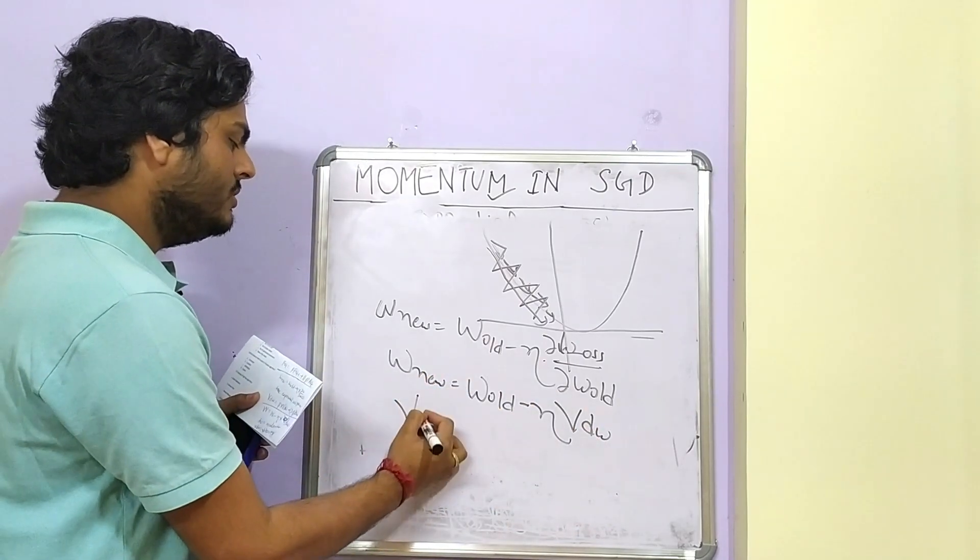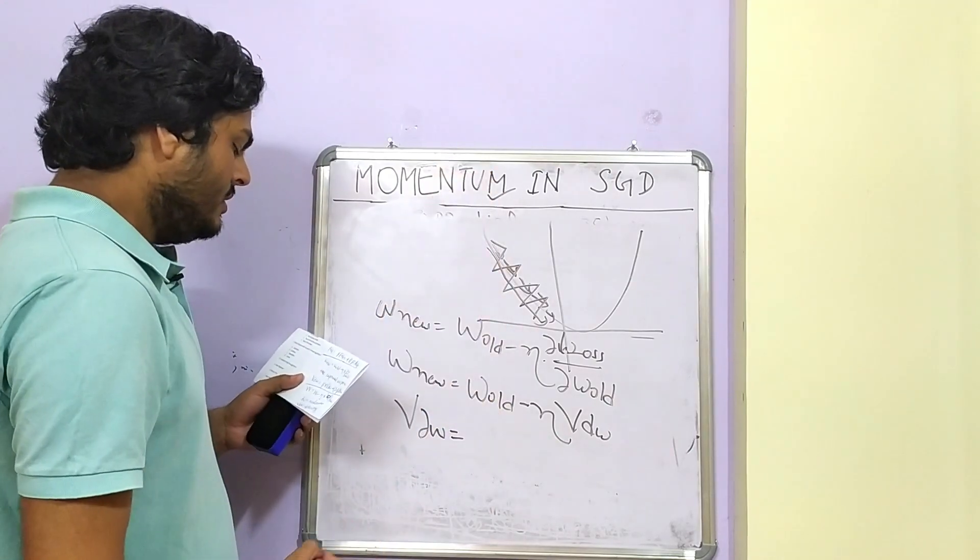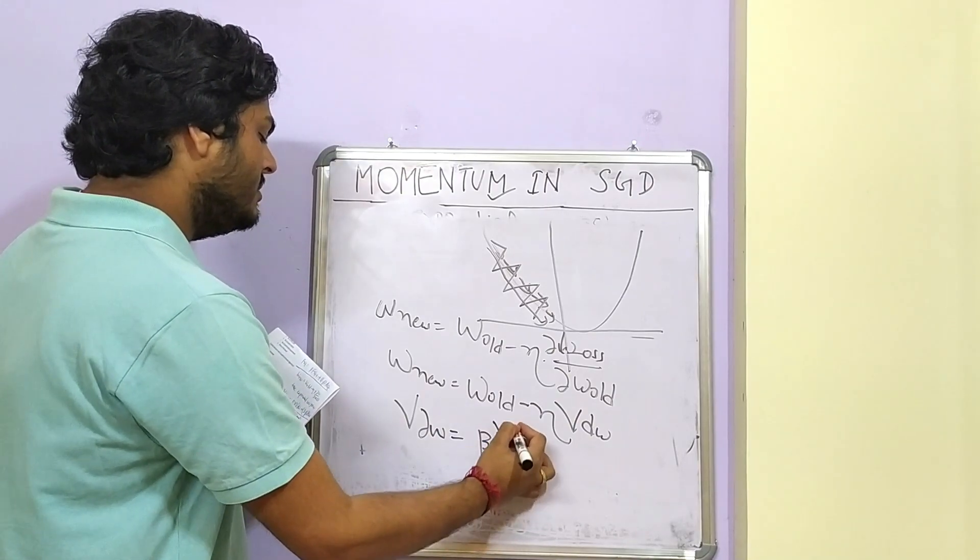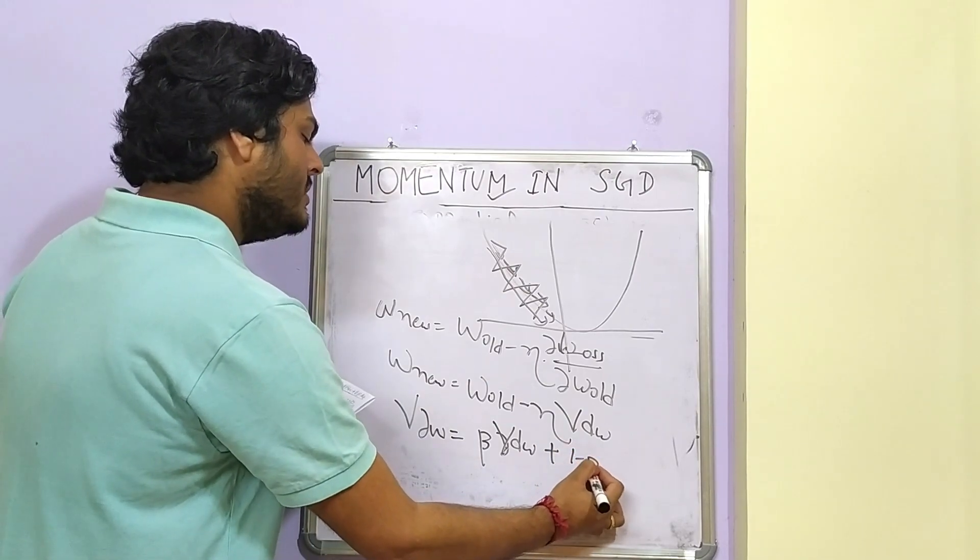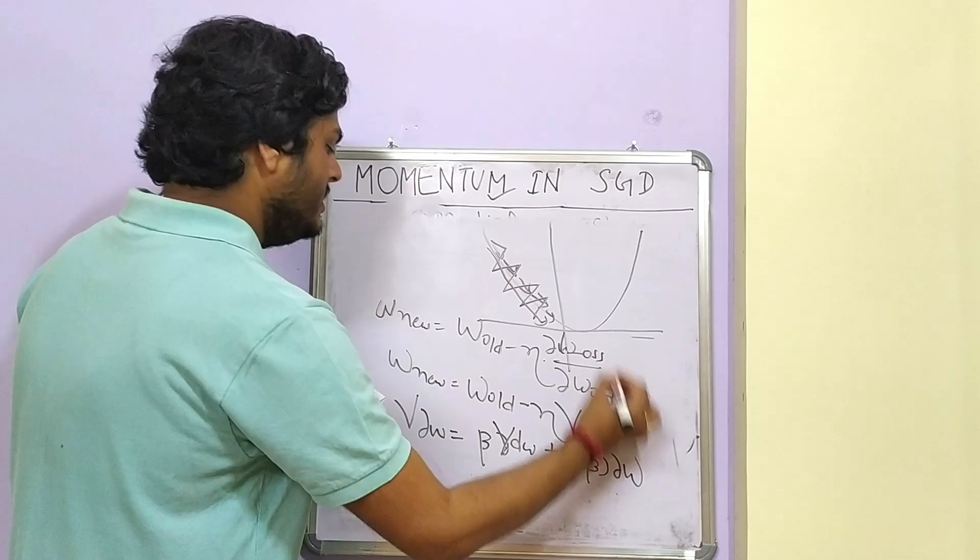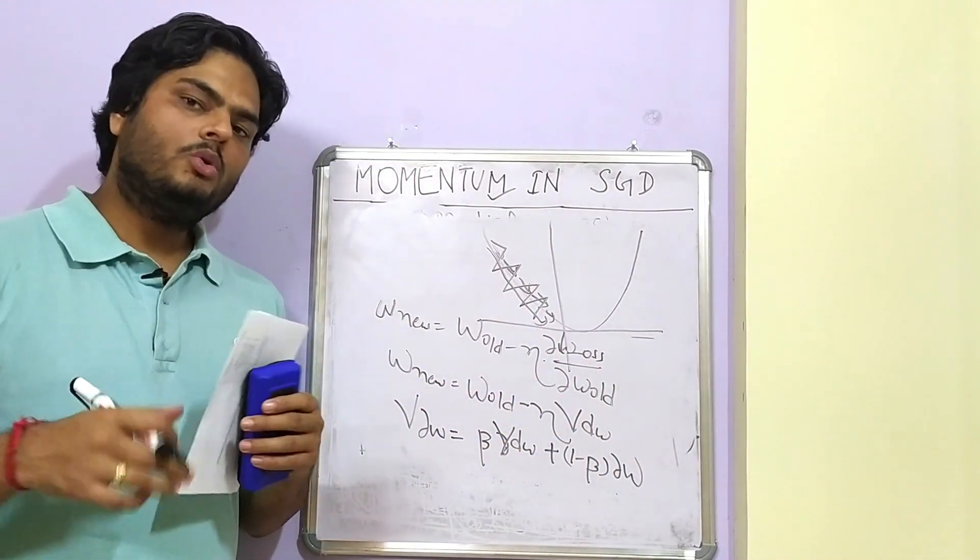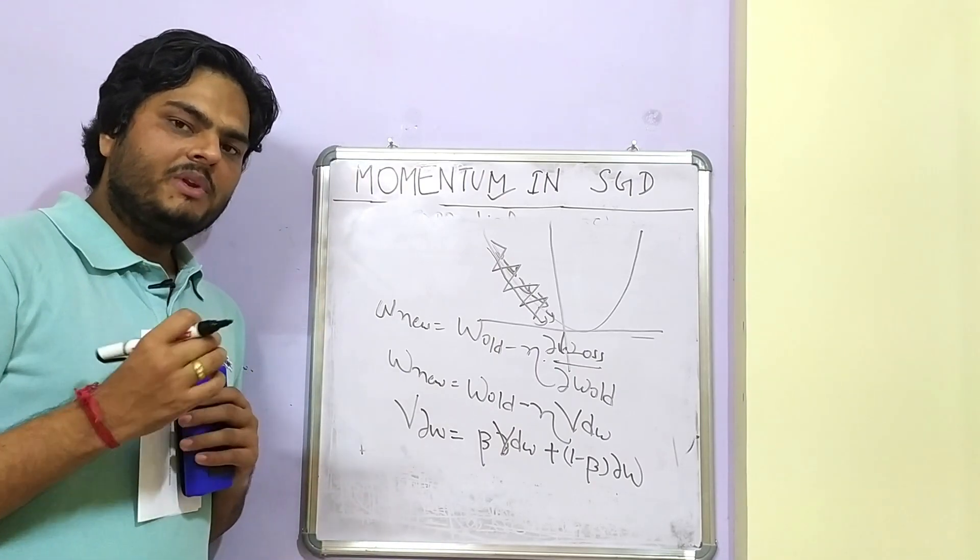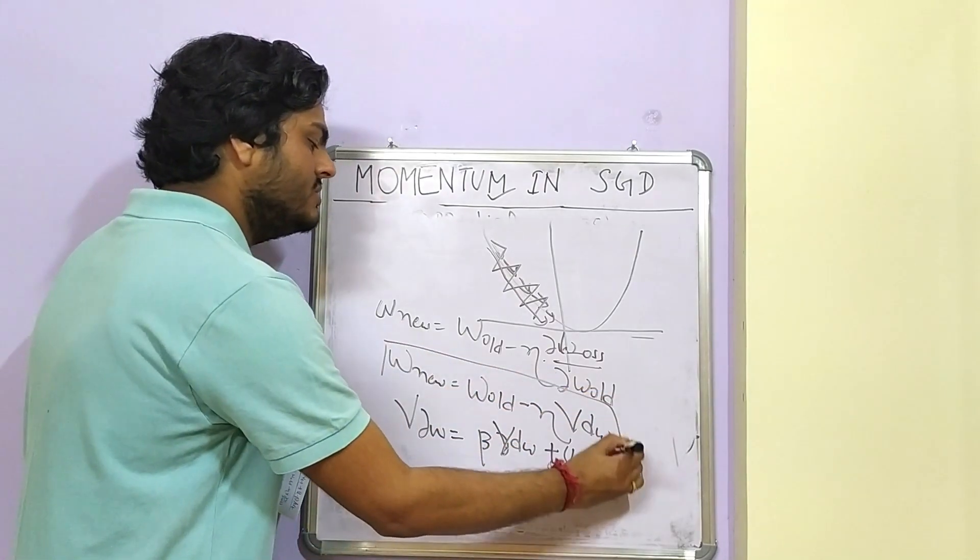What happens when momentum comes in picture? When momentum comes in picture, we optimize our weight like this. W_new is equal to W_old minus eta into V_DW, not directly derivative of W with respect to old. There is an eta that is learning parameter and then V_DW. What is this V_DW? This is important and this is the crux of the entire momentum.